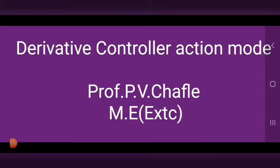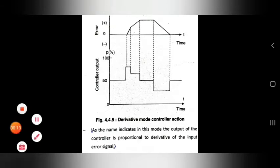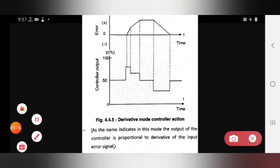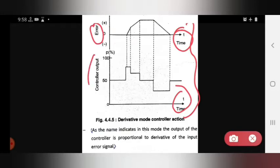Hello everyone. Today we see the topic that is the derivative controller action mode. In this, there will be two graphs — on the x-axis there is time and on the y-axis there are two parameters: error and controller output. As the name indicates, in this mode the output of the controller is proportional to the derivative of the input error signal.